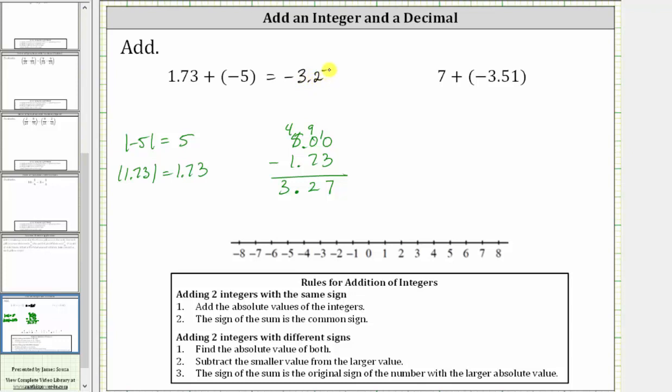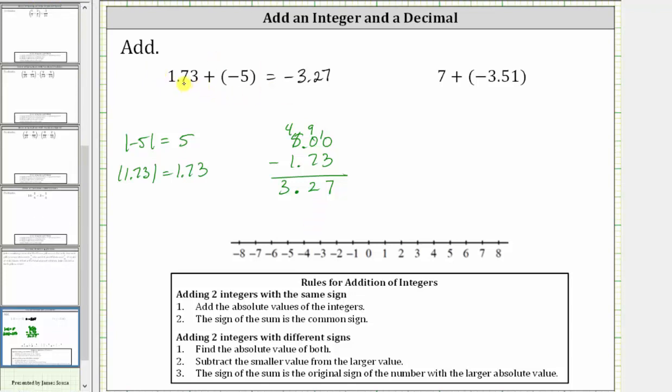This should make sense because the negative five is going to outweigh the positive 1.73. To model this on the number line, we begin by modeling 1.73. We start at zero and move right 1.73 units. Then because we are adding negative five from here, we go left five units, which brings us back to negative 3.27.